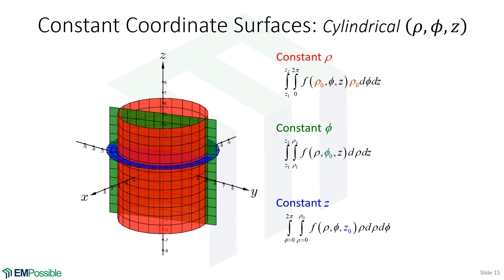Here are our constant coordinate surfaces in cylindrical coordinates. If we have a constant value of rho, we're integrating over a cylinder — so if we're analyzing a coaxial cable with cylindrical symmetry, we'd adopt cylindrical coordinates and use that constant coordinate surface. If phi is constant, we're integrating over a plane at some angle phi. And if z is constant, we're integrating over the circular area in blue.